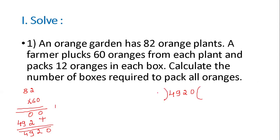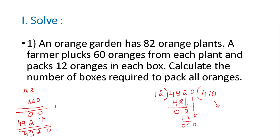Packed in 12 oranges per box, so divide by 12. 12 fours are 48. 9 minus 8 is 1. 4 minus 4 is 0. Take this 2 here. 12 ones are 12. 2 minus 2 is 0, 1 minus 1 is 0. Take this 0 here — we cannot group 0 into 12, therefore put 0. Total boxes required: 410.